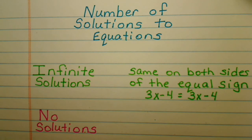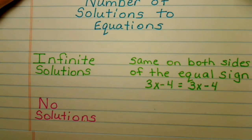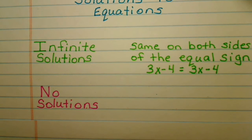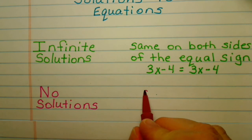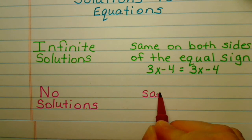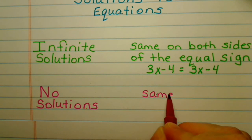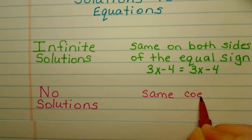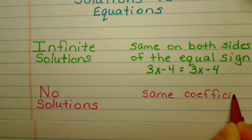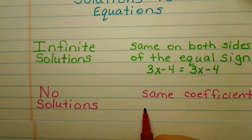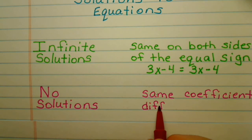Now let's look at no solution. A no solution occurs when you are solving your problem and you end up with the same coefficient and variable on both sides, but you have different constants.